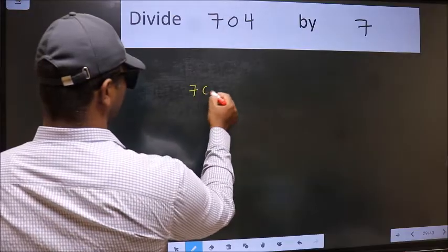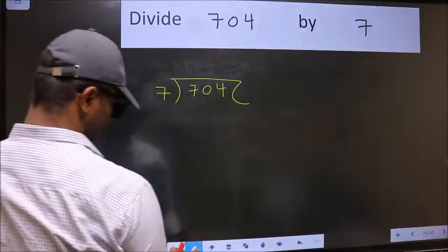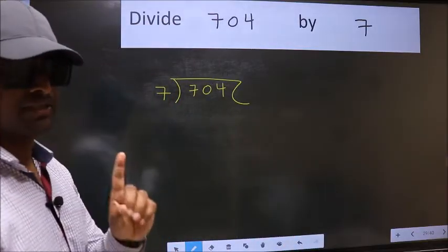7, 0, 4 and 7 here. This is your step 1.